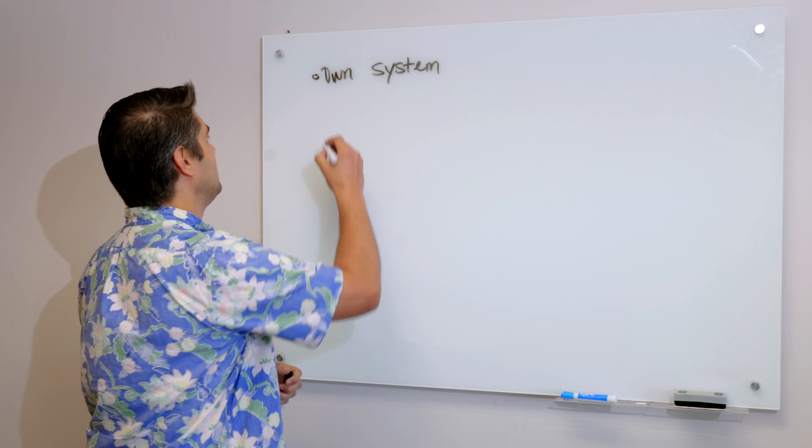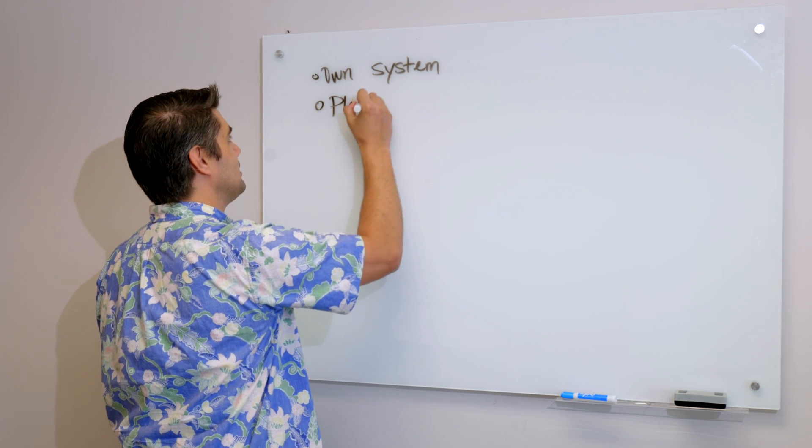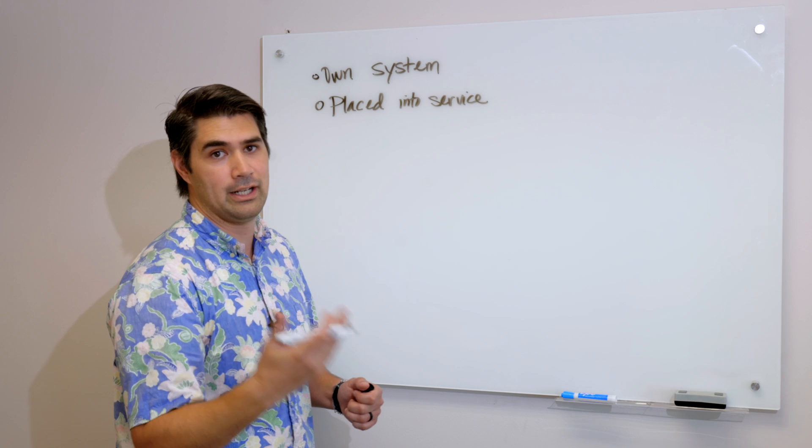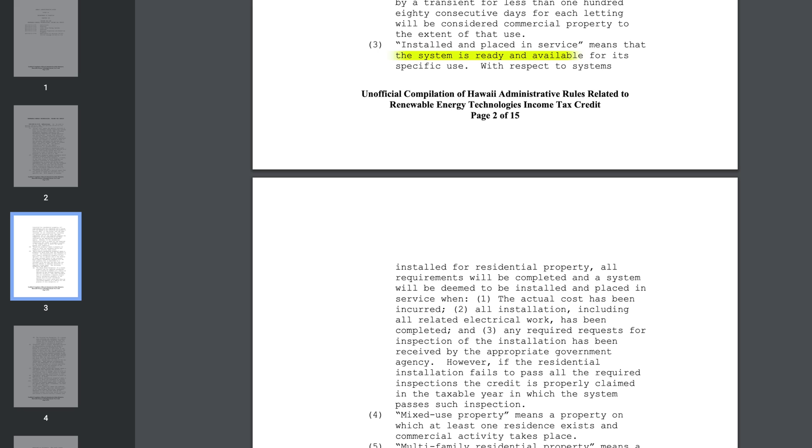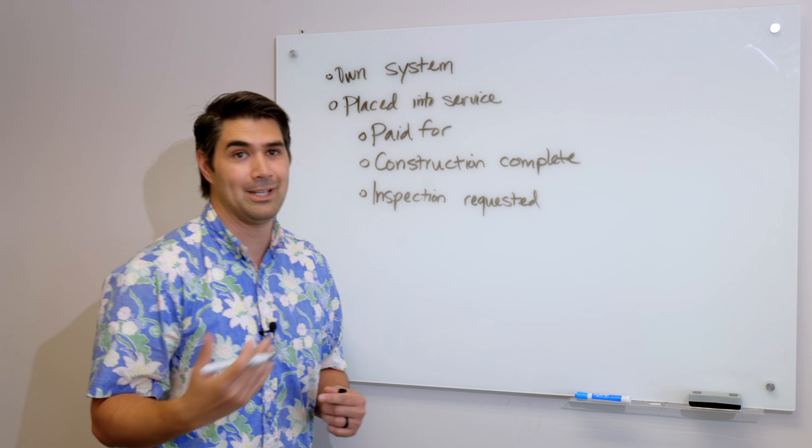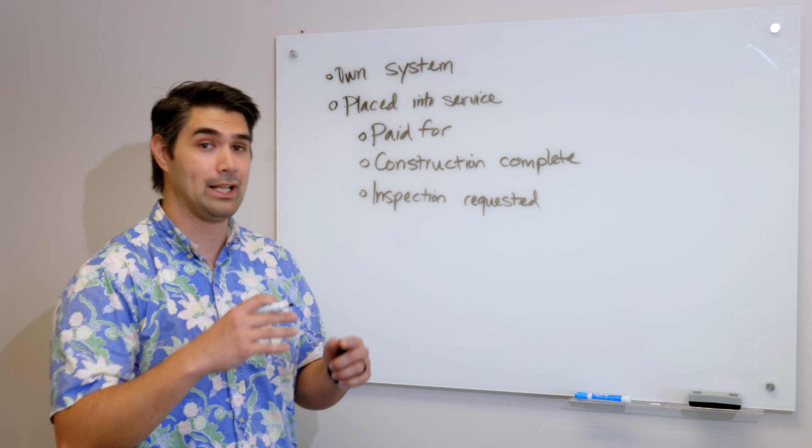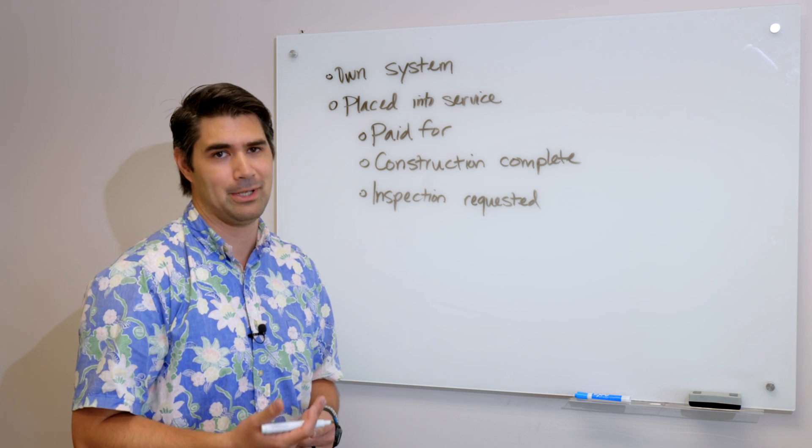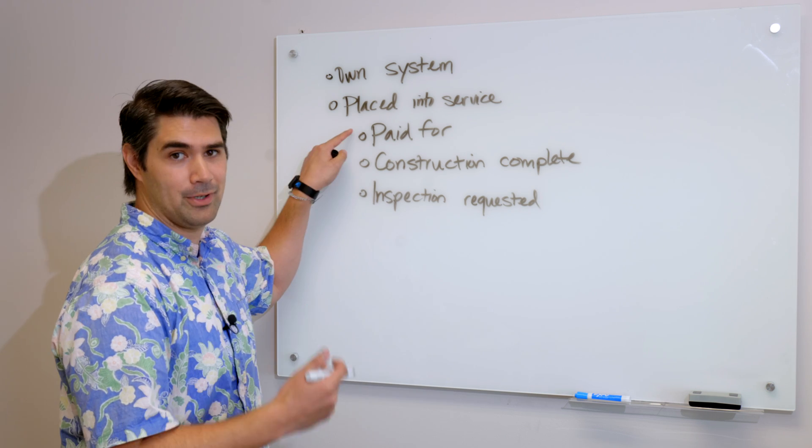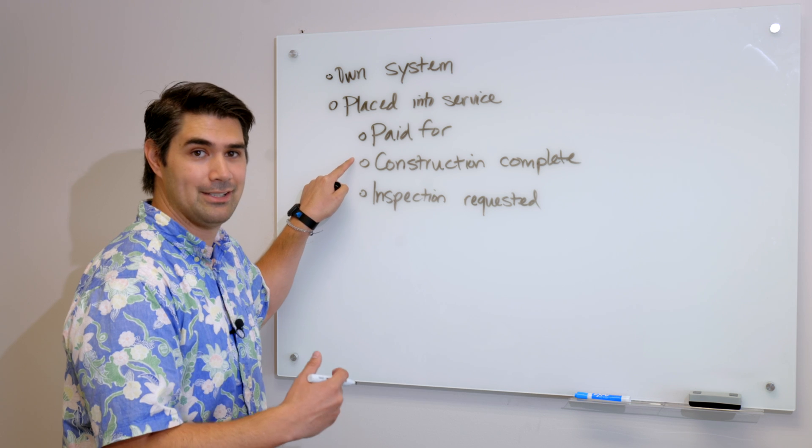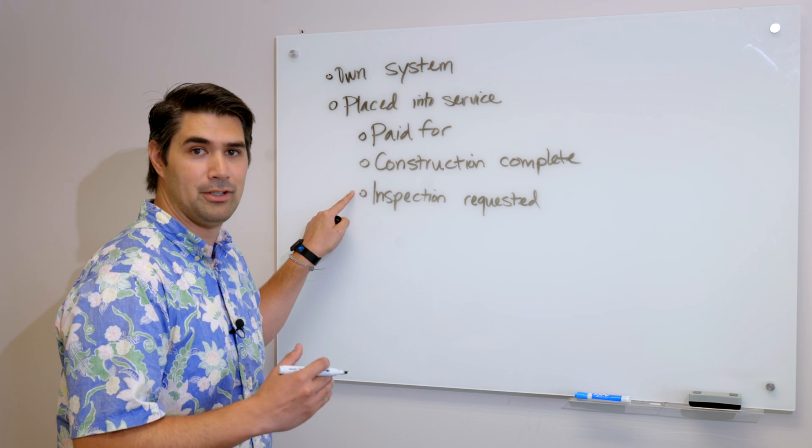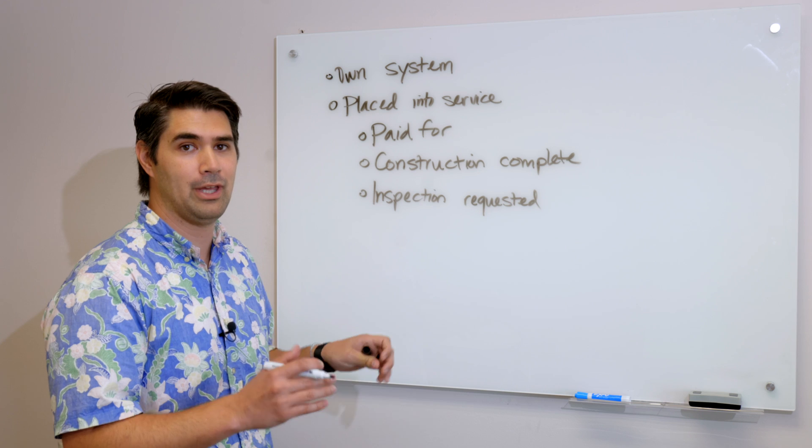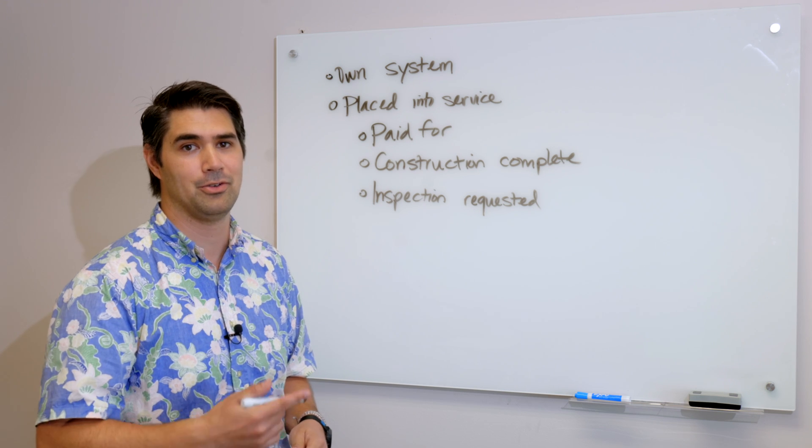And then the other part is that it has to be placed into service the year that you're trying to claim it. What does placed in service mean? It means it was paid for, the construction is complete, and the inspection was requested. So if I'm getting my system installed this year and I want to claim the tax credit for this year, meaning next year when I file my taxes, I have to pay for it this year. The construction has to be completed this year and then the company that installed it has to request that inspection. If I don't do that I'll have to wait until the next year in order to get my tax credit.